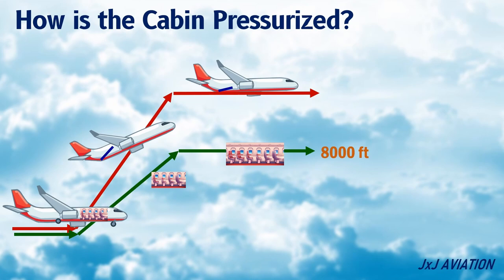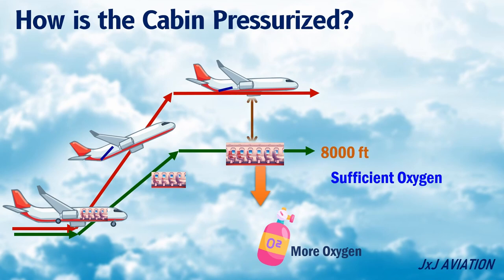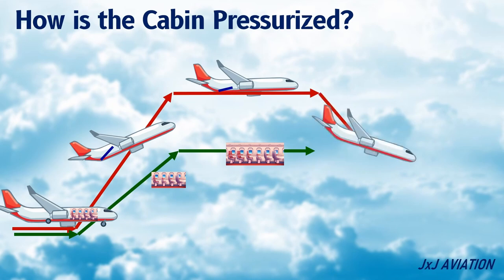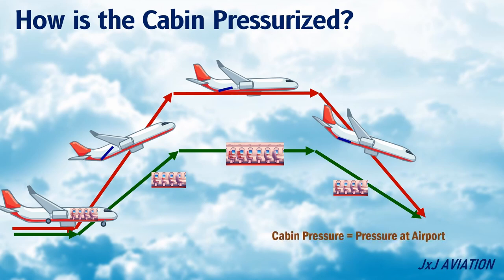At this altitude there is sufficient oxygen available inside the cabin. If the cabin altitude is reduced further there will be more oxygen; however, the pressure difference between the cabin and the outside increases. So the aircraft structure has to be made stronger to withstand this pressure difference, which would make the aircraft heavier. When the aircraft starts descending, the cabin altitude should also decrease. This is done by closing the outflow valve and increasing the cabin pressure. The pressurization system will try to maintain the cabin pressure the same as the pressure at the landing airport. When the aircraft lands, the outflow valve opens fully in order to depressurize the aircraft.